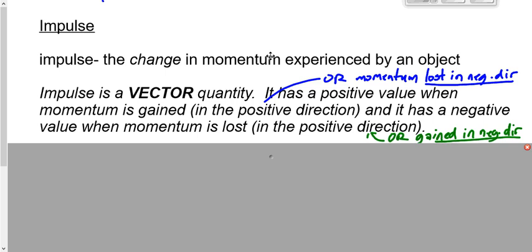Now what about when that ball hits the ground? We're looking for the impulse it experiences as it hits. It's moving just before it hits, and then after it hits it stops — that's a loss of momentum. Is that a negative or positive impulse? That would be a positive impulse, because it lost momentum in the negative direction — lost momentum in the negative direction equals positive impulse.